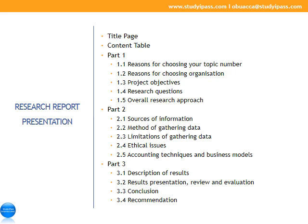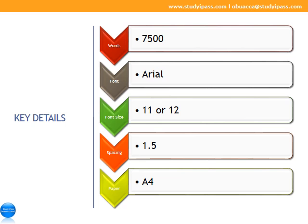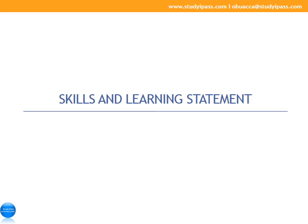When you complete your research report, this should be the layout and outcome of the report. Remember, the marker will be looking for all these key components when marking your research report. The key formatting details are: word count 7,500, font size 11 or 12, spacing 1.5, paper size A4.